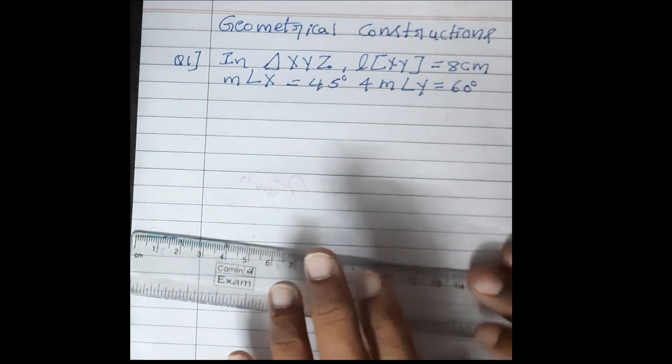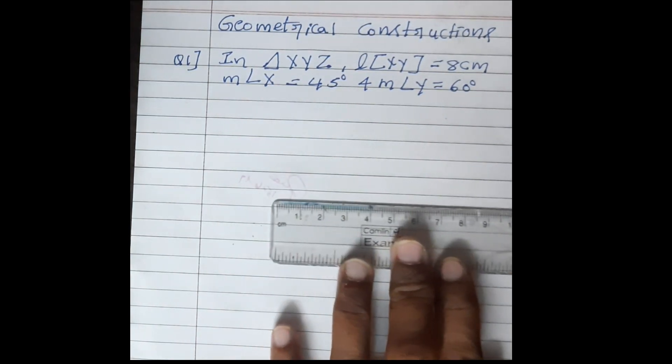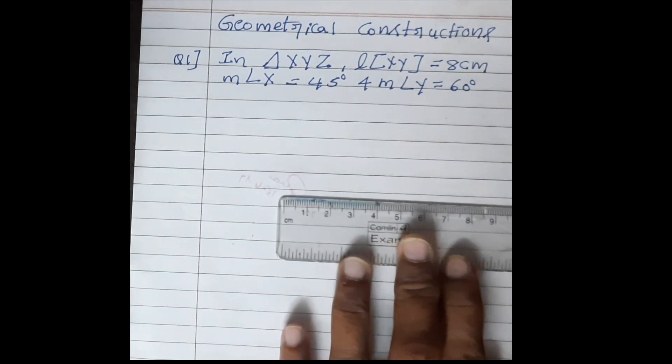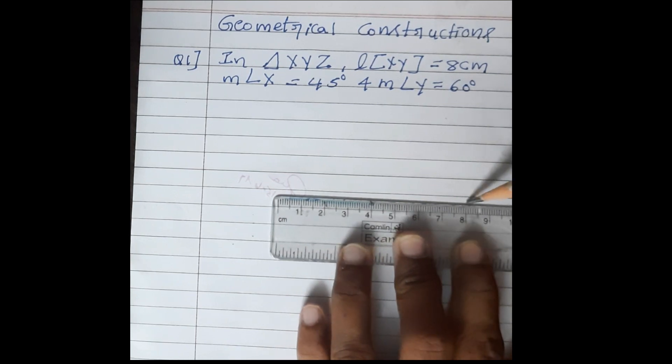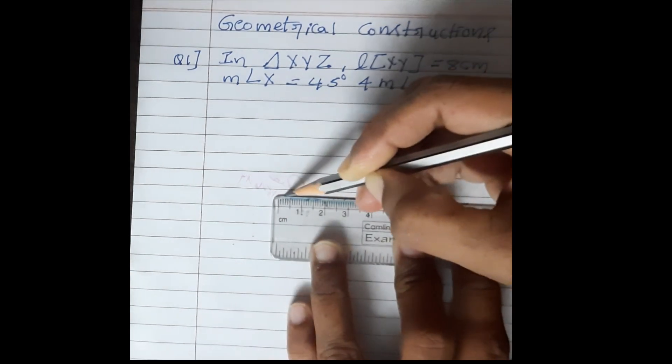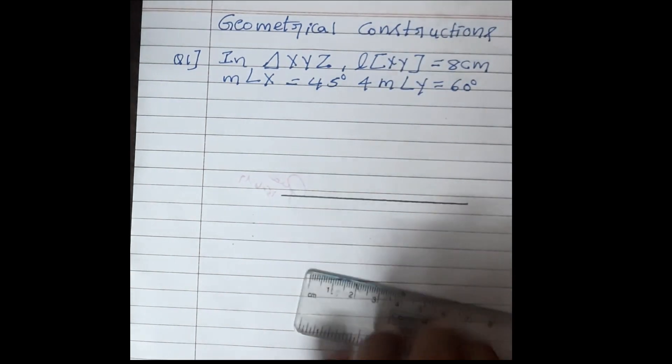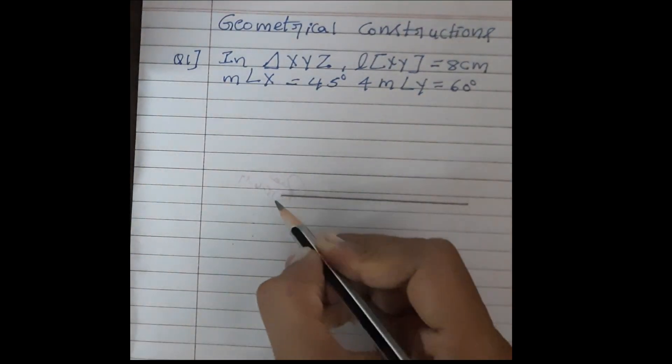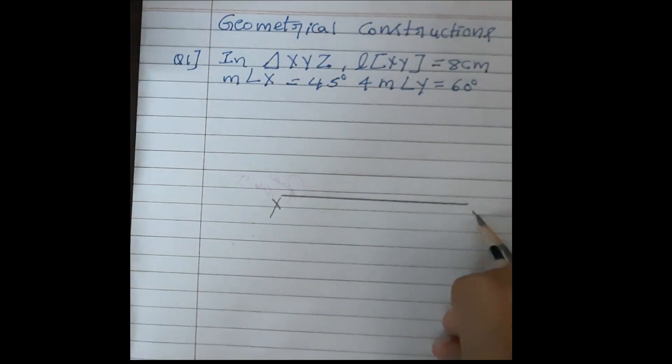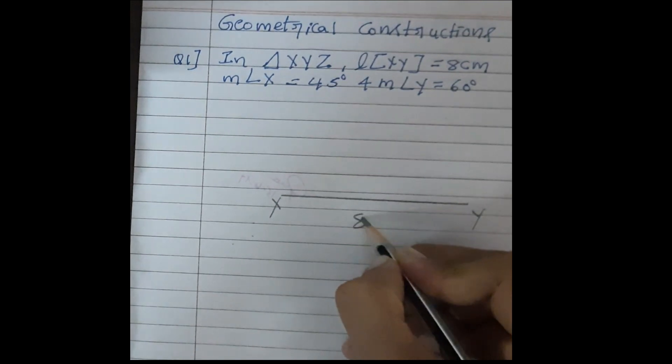Now, we will take the scale and we will draw 8 cm baseline. Here 8 is there, 0. We will label it, this is X, this is my 8 cm.